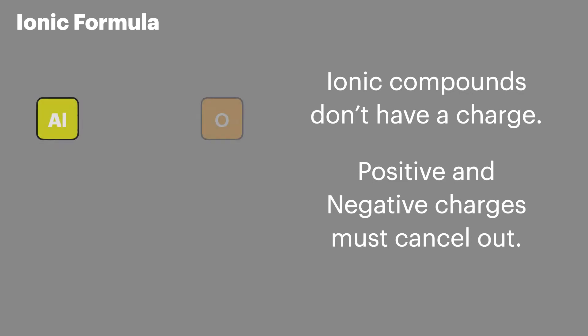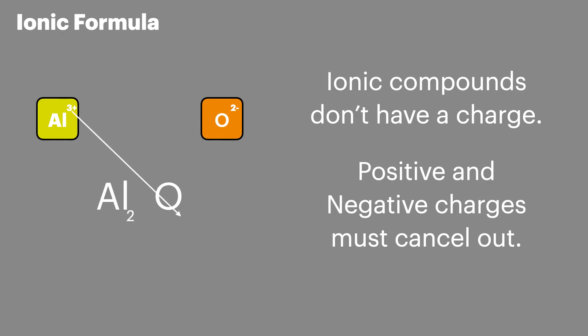We'll look at aluminium and oxygen. Aluminium is in group 3 so has a 3+ charge, and oxygen is in group 6 so has a 2- charge. The formula will obviously contain aluminium and oxygen, so we can use the crossover method to find out how many atoms of each are required. We take the number of charges on the oxygen and cross it over to be the number of aluminium atoms, and then we take the number of charges on the aluminium and cross that over to be the number of oxygen atoms.